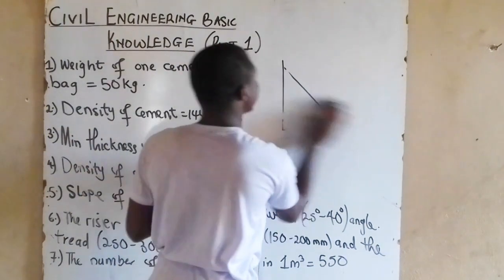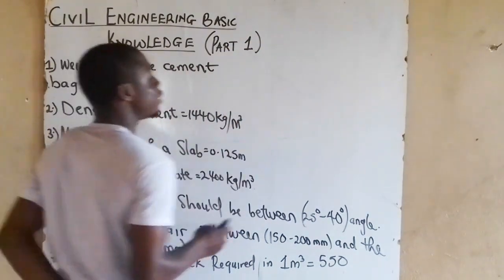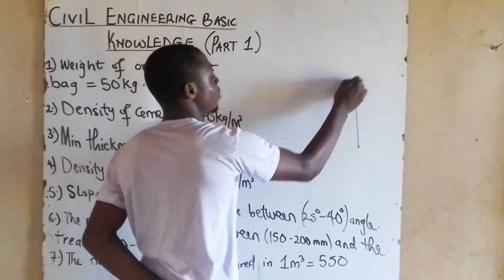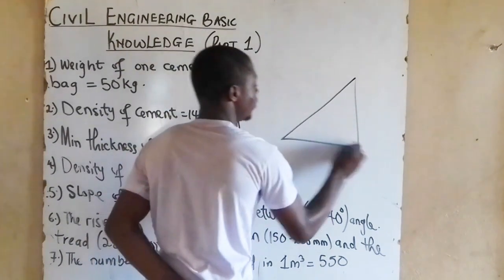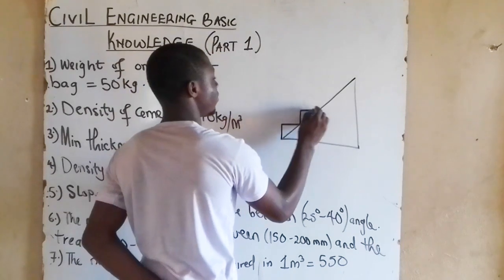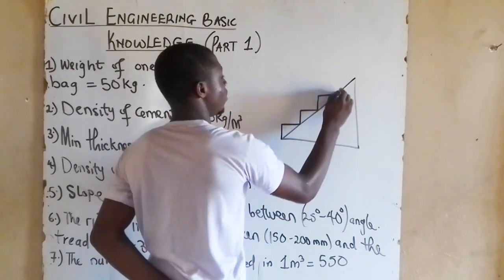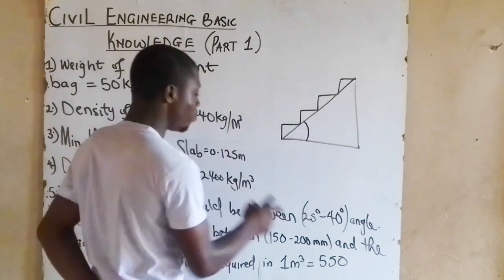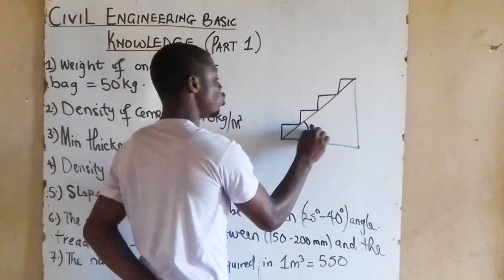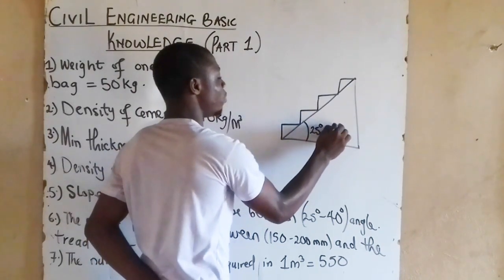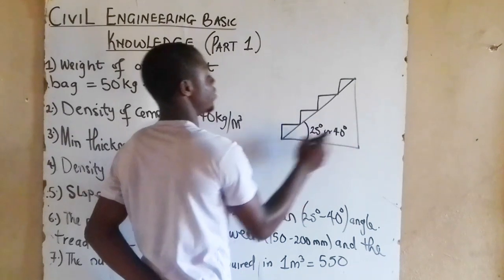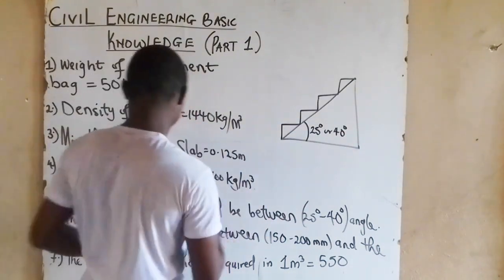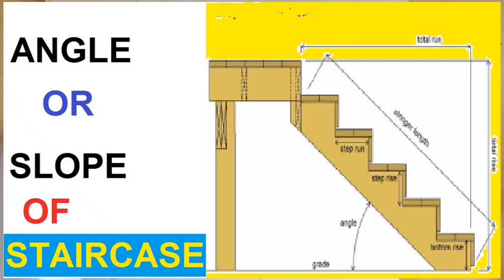Now, I want to relate it to engineering. We have taught that the slope of the staircase, let me draw the staircase this way. As you can see, this is the staircase. So, we have taught that the slope, the angle, must be 25 degree or 40 degree. So, this is what we mean by the slope.